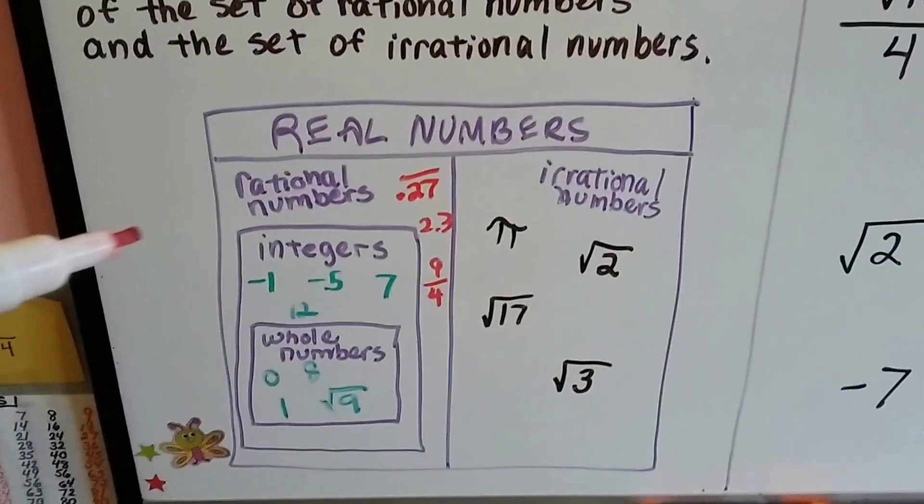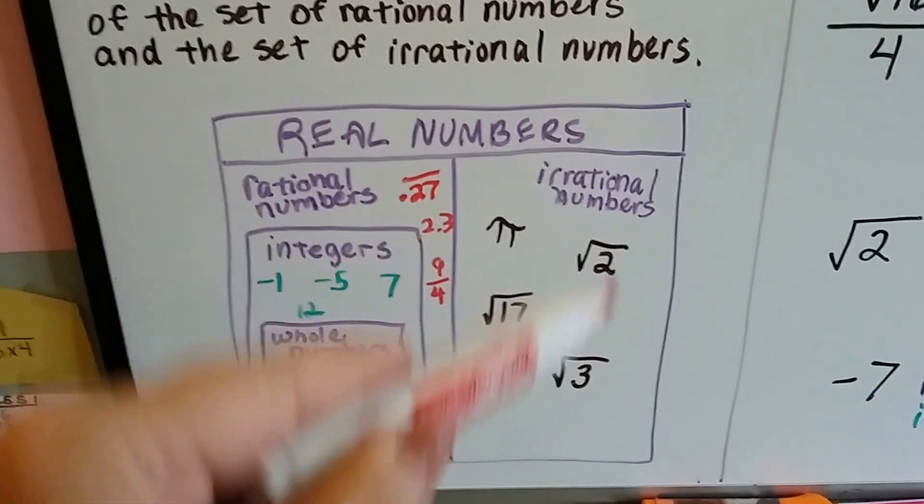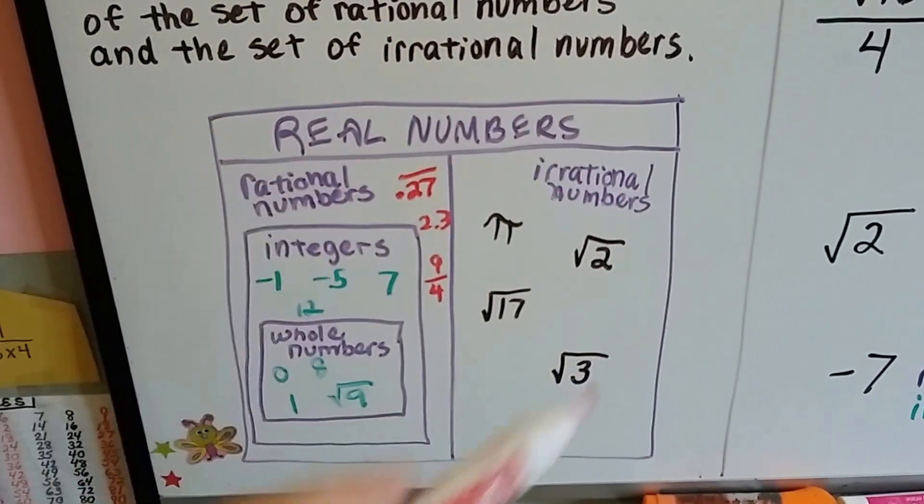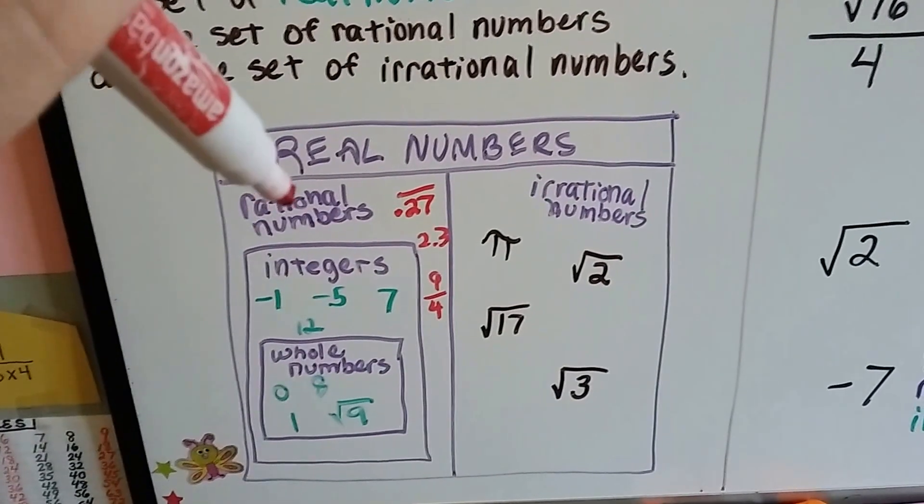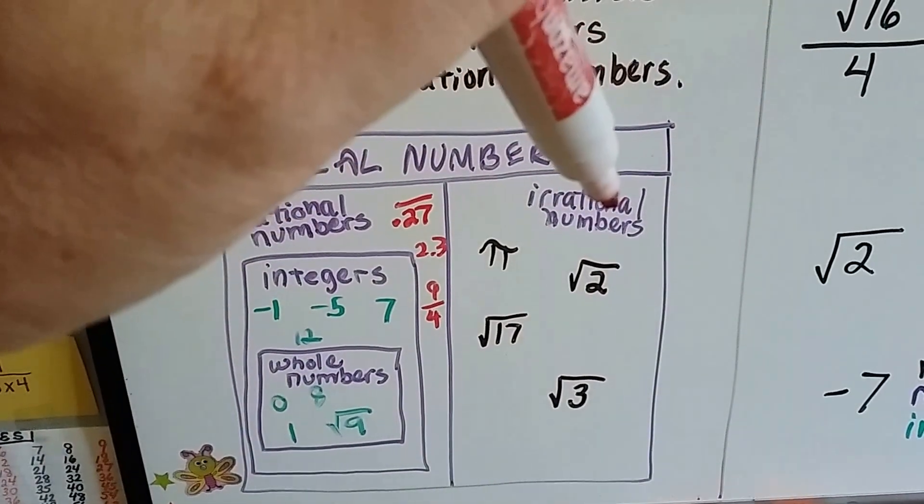So, if it were in a diagram, it would look like this. These are all real numbers. Real numbers are broken into rational numbers and irrational numbers.